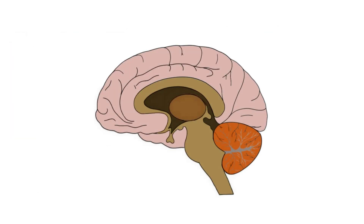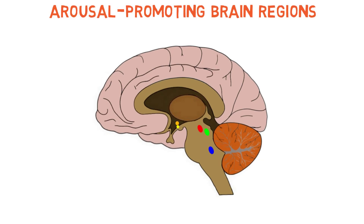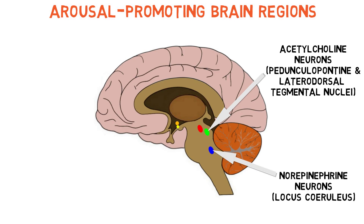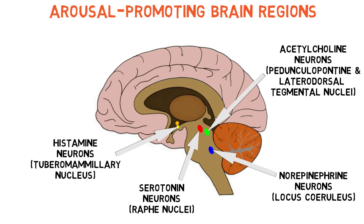The transition between sleep and wakefulness is controlled by a balance of arousal-promoting and sleep-promoting systems in the brain. Wakefulness is supported by widespread ascending arousal networks, which include acetylcholine neurons in the pedunculopontine and laterodorsal tegmental nuclei, norepinephrine neurons in the locus coeruleus, serotonin neurons in the raphe nuclei, and histamine neurons in the tuberomammillary nucleus.